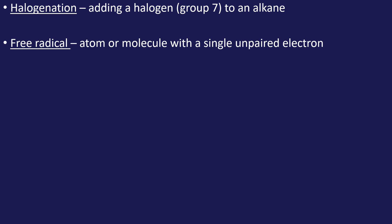Let's start with some key terms then. So the term halogenation means the adding of a halogen to an alkane. So this is the halogenation of alkanes and it's adding a group 7 atom to the alkane. The term free radical is given to something or a species that has an unpaired electron and we usually represent it as a dot. So Cl dot would represent a chlorine free radical.